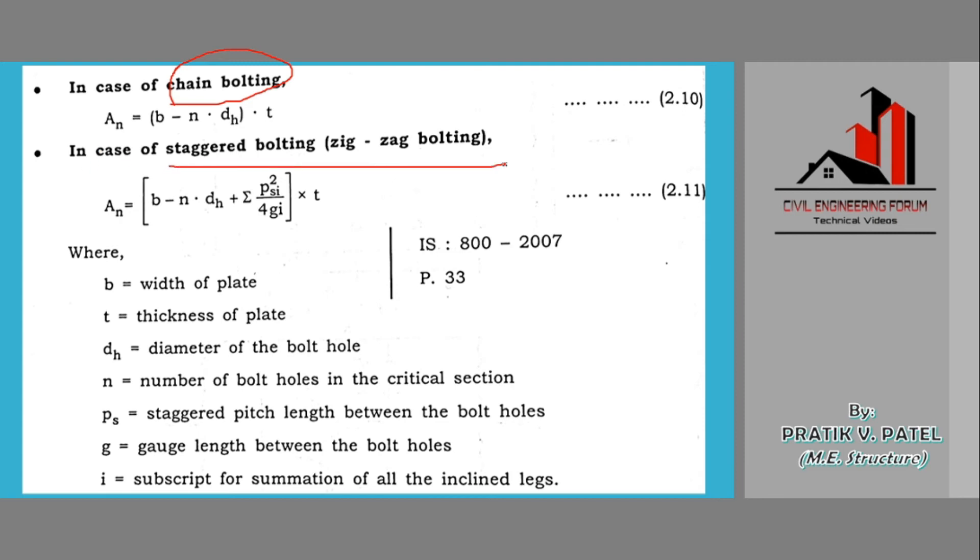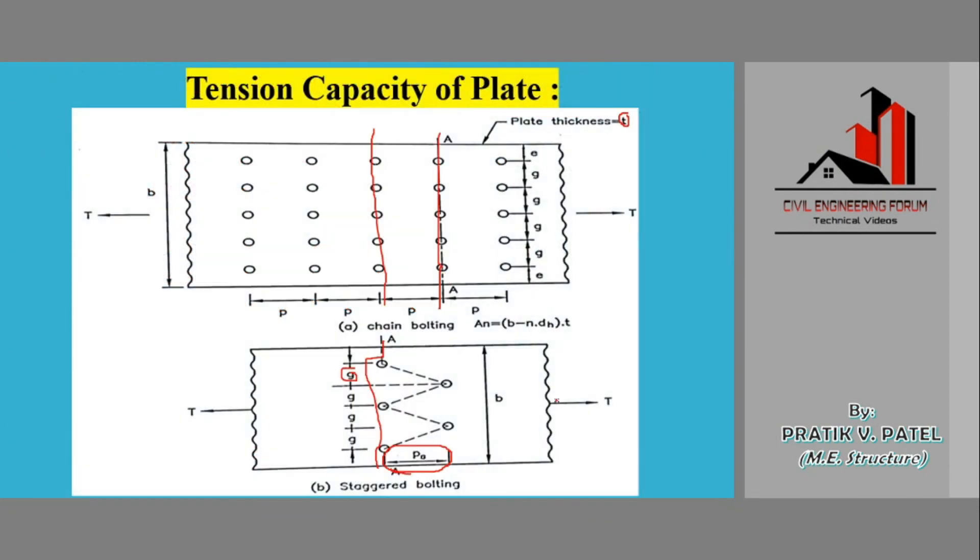In case of staggered bolting, the zigzag pattern bolting, the formula is An equals b minus n into dh plus summation of psi squared divided by 4 into gi. g is the gauge length of the bolt holes, ps is the staggered pitch length between the bolt holes, and i is the subscript for the summation of all the inclined legs.